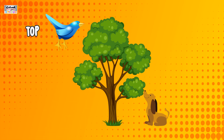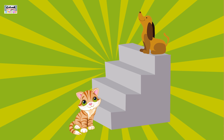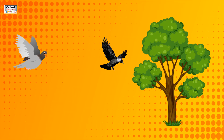Top and bottom. Observe this picture carefully. The bird is at the top, the dog is at the bottom. In this picture, the cat is at the bottom of the stairs and the dog is at the top of the stairs.